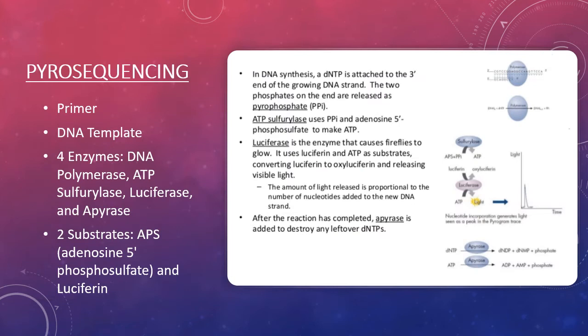When you choose to use pyrosequencing as your method for DNA sequencing, you need a few things that are different from Sanger sequencing. You do need a primer and a DNA template, but you also need four enzymes: DNA polymerase, ATP sulfurylase, luciferase, and apurase. You also need two substrates, adenosine 5' phosphosulfate, or APS, and luciferin.